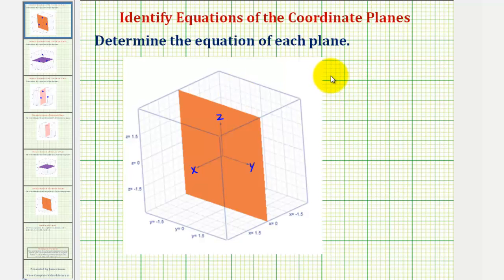Now we're going to take a look at the three coordinate planes in the 3D coordinate system, often called R3.